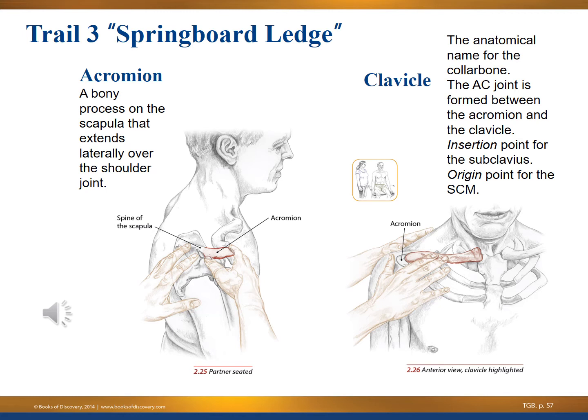The acromion is a bony process on the scapula that extends laterally over the shoulder joint. Moving to the right side of the screen, the clavicle is the anatomical name for the collarbone. The AC joint is formed between the acromion and the clavicle. The clavicle is the insertion point for the subclavius and the origin point for the SCM — the sternocleidomastoid muscle.